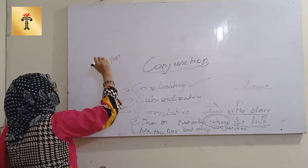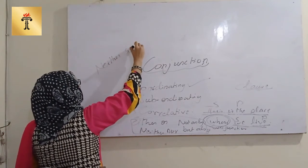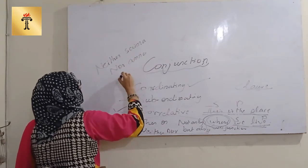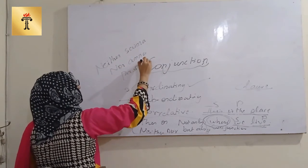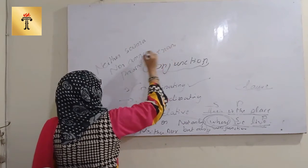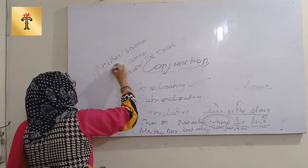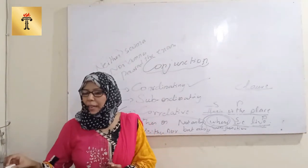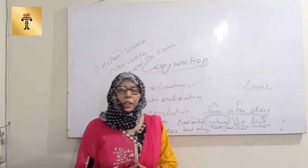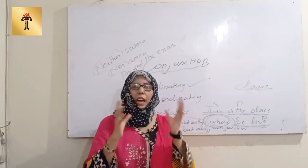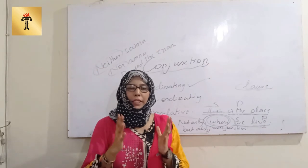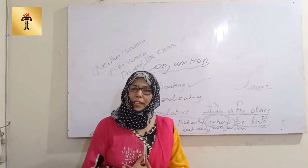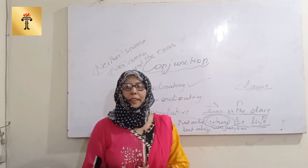For example: 'Neither Saima nor Amna passed the exam.' Here we are using correlative conjunctions to join the two parts and making a complete sense. My dear students, this was just an outline of conjunction and interjection. I hope you understand. Your practice exercises will be provided very soon. Take care.